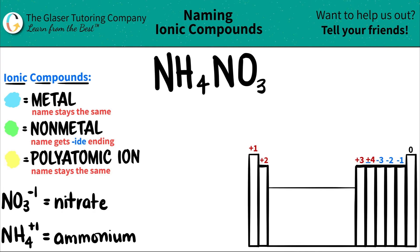Today, we are going to be naming the ionic compound NH4NO3. Here's a little trick: if you see that you have three or more different elements in your compound, you know that you're dealing with at least one polyatomic ion.